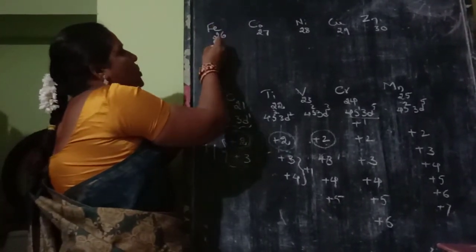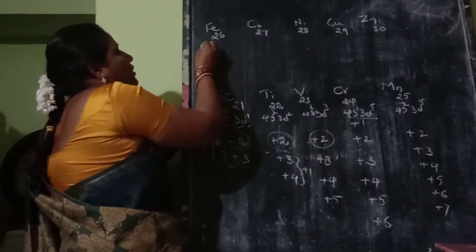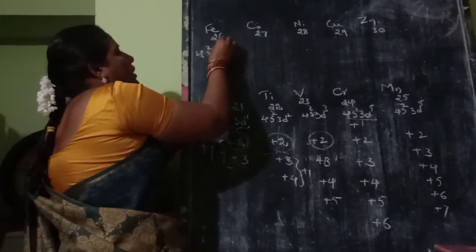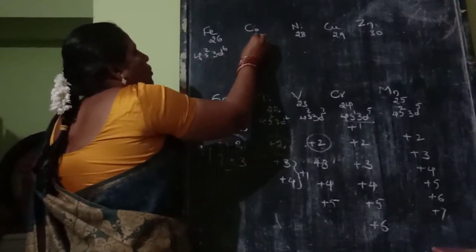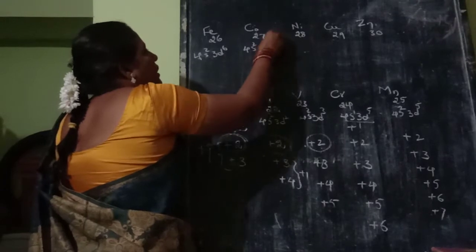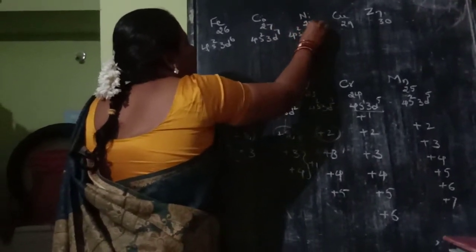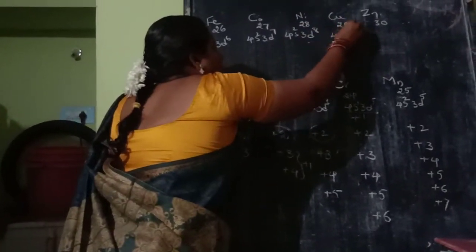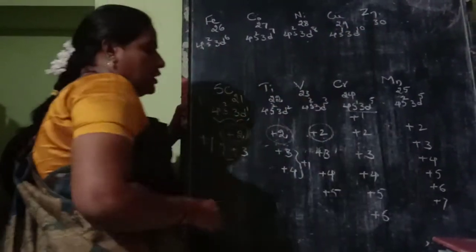Iron's electronic configuration is 4S2 3D6. Cobalt is 4S2 3D7. Nickel is 4S2 3D8. Copper is 4S1 3D10. Zinc is 4S2 3D10.